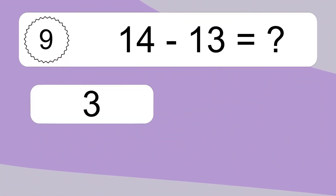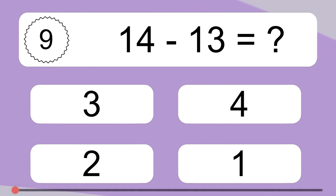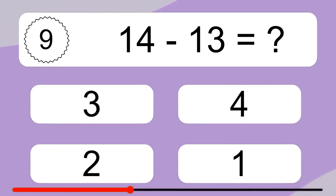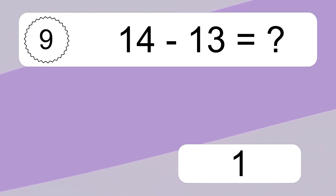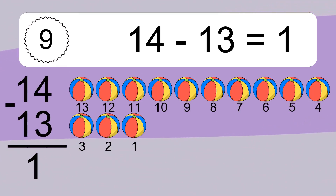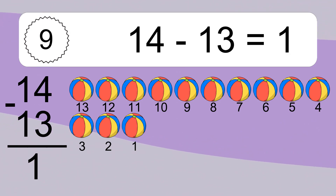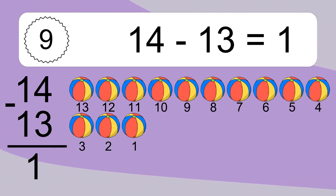14 minus 13 equals what? 14 minus 13 equals 1. Let's count it: 13, 12, 11, 10, 9, 8, 7, 6, 5, 4, 3, 2, 1.